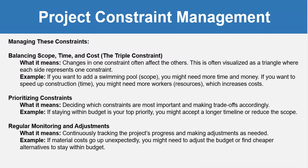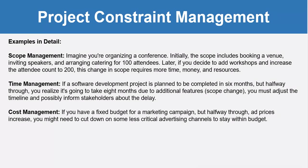Prioritizing constraints means deciding which constraints are more important and making trade-offs accordingly. For example, if staying within budget is your top priority, you might accept a longer timeline or reduce the scope. Regular monitoring and adjustments means continuously tracking project progress and making adjustments as needed — for example, if material costs go up unexpectedly, you might need to adjust the budget or find cheaper alternatives.